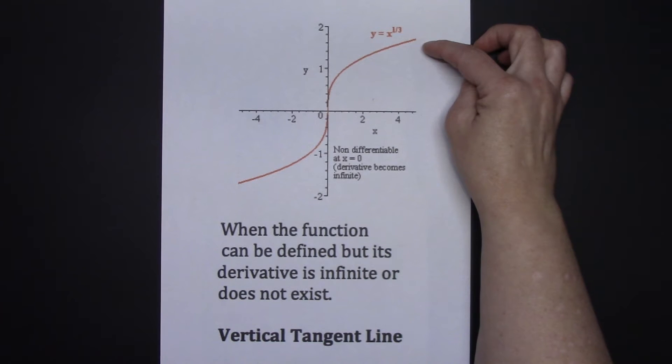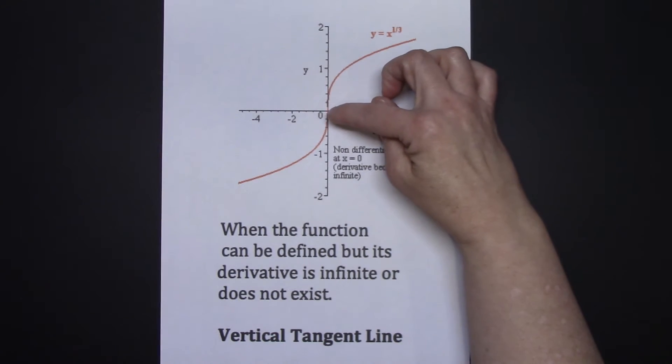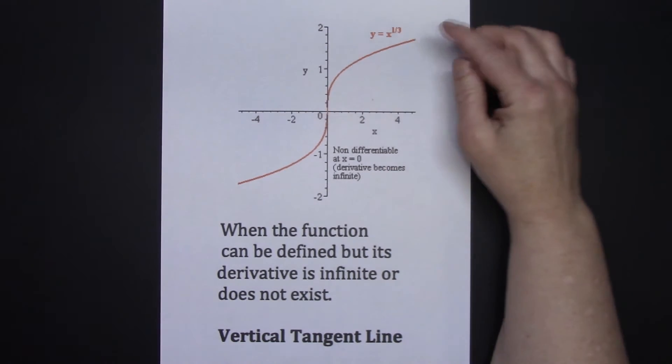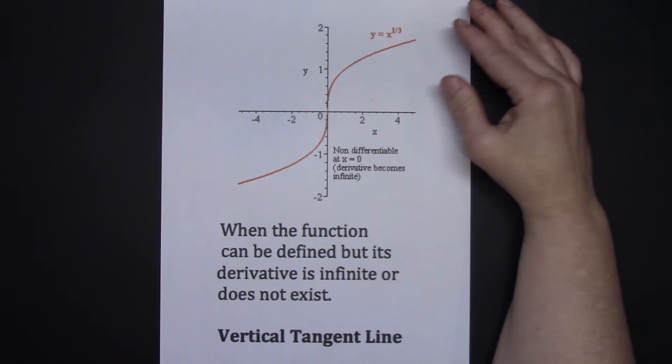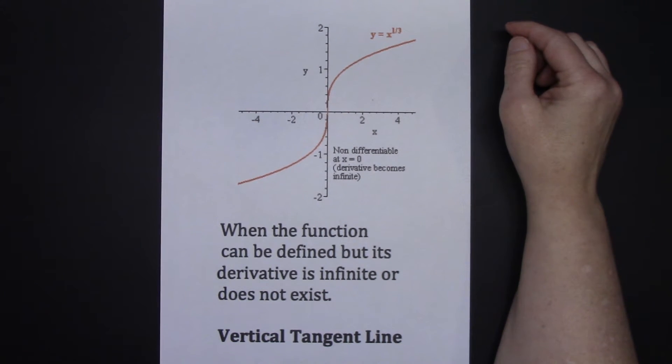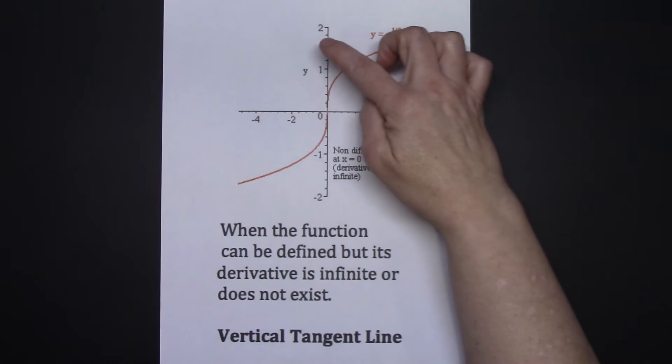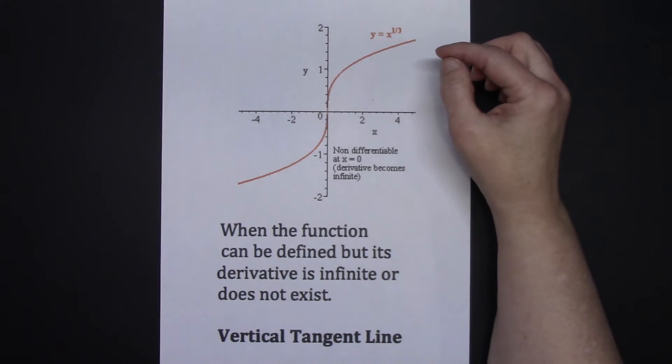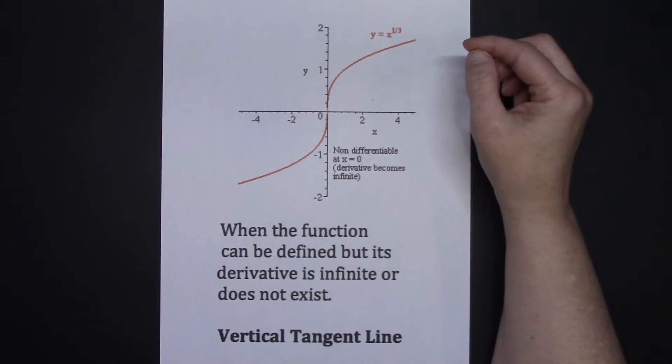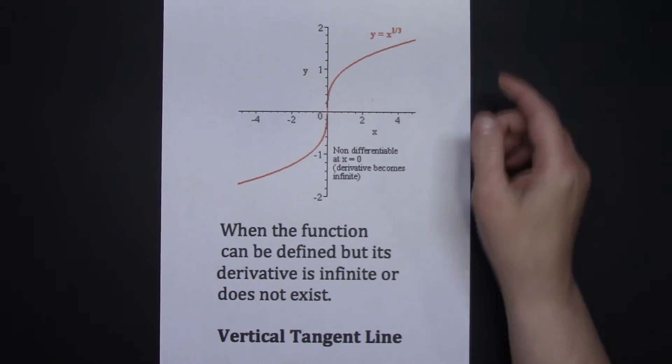This is the function of y equals the cube root of x. At x equals 0, we have a vertical tangent line to the function y equals the cube root of x. Therefore, because I've got the vertical tangent line at x equals 0, the function is not differentiable at x equals 0.